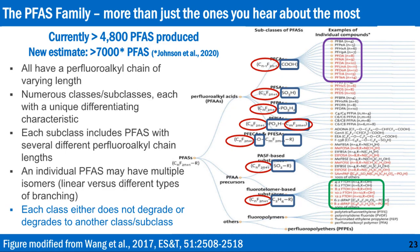What I really want to emphasize is how do we get so many numbers? Well, you have this perfluoroalkyl chain that can vary in length — C2 to C13, C14, up to C16 — that has completely replaced the hydrogens with fluorine. What I'm showing you on the right is kind of the family, so we have this whole family.